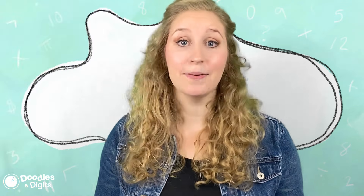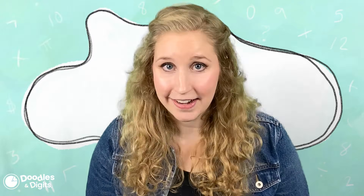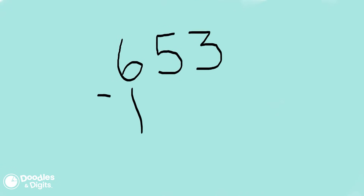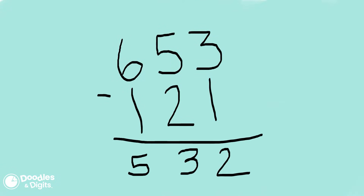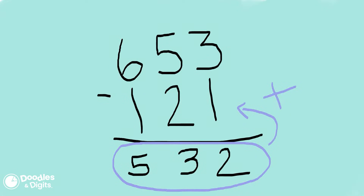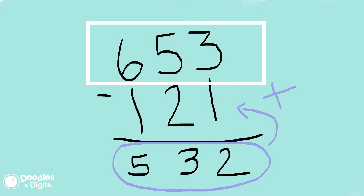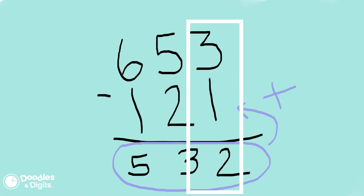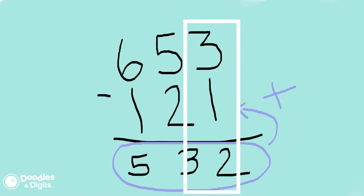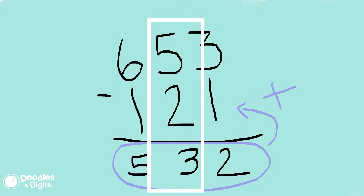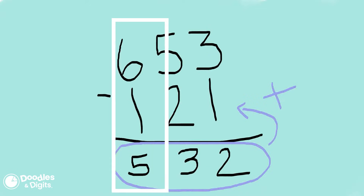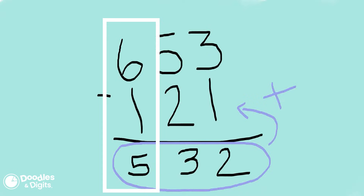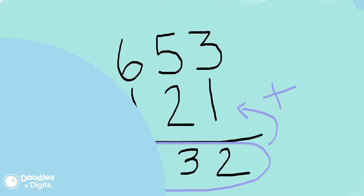Is there a way that I can check my thinking when I'm finished? There's actually a great way to check your thinking when using the standard algorithm for subtraction. You can take the difference and add it to the subtrahend, and it should equal the top number. So for example: two plus one equals three, three plus two equals five, five plus one equals six. So I know that my difference is correct.